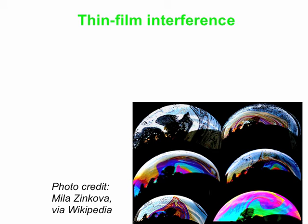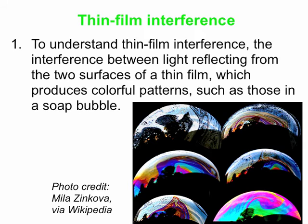Today we're going to talk about thin film interference. This is interference between light that reflects from the two surfaces of a thin film. A good example is a soap bubble, which has a very thin film of mostly soapy water. You can get some colorful patterns, as you see in this picture, and those patterns are explained by thin film interference — interference between light reflecting off the two surfaces of the film.